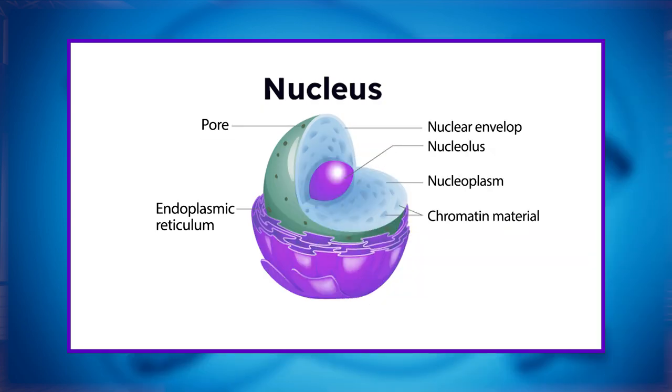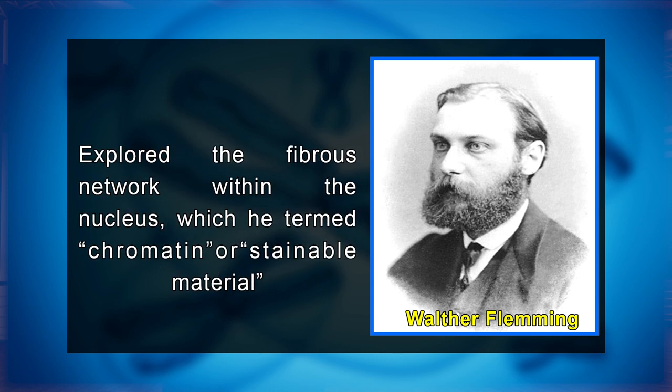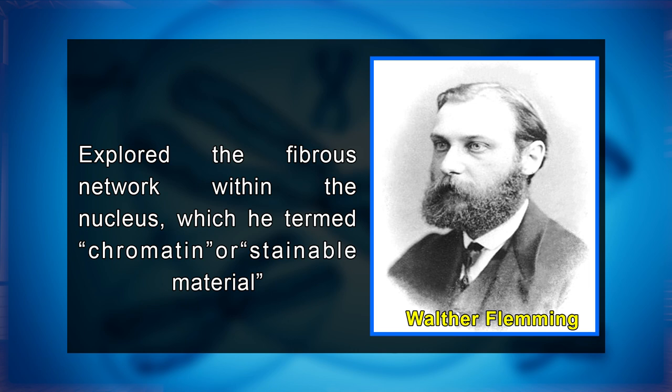By the middle of the 19th century, scientists understood that cells derived from other cells and that hereditary information was located in the nucleus, but the physical nature of the hereditary material remained unknown. The microscopes of the time provided very poor resolution of living cellular structures, making it necessary for investigators to treat fixed cells with various stains to enhance the contrast of their contents. Using innovative microscope techniques and painstaking precision, German anatomist Walter Fleming recognized and explored the fibrous network within the nucleus, which he termed chromatin, or stainable material. Fleming had actually discovered the chromosome.